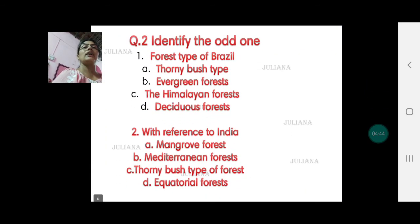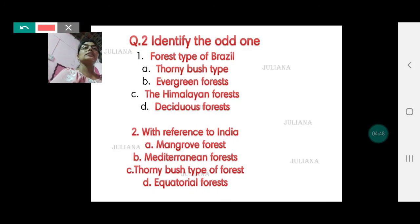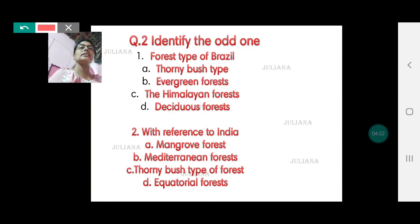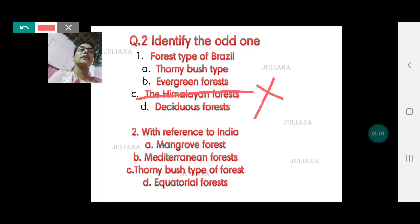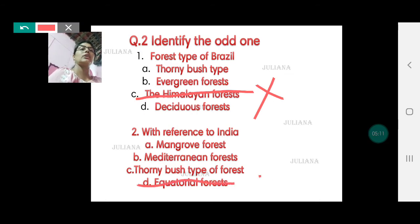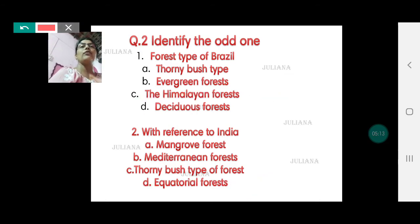Second question: identify the odd one out. Keeping in mind the forest types of Brazil — do they have tawny bush? Yes. Evergreen? Yes. Himalayan forest is the odd one out; they don't have Himalayan forest, but they do have deciduous forest. With reference to India — do we have mangrove forest? Yes, in the coastal regions. Mediterranean? Yes, in the north of India. Tawny bush? Yes, in Rajasthan. But we don't have the equatorial type of forests, so that is the odd one out.